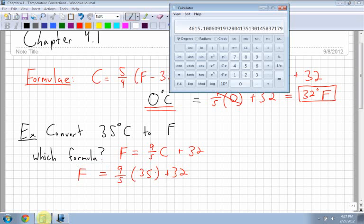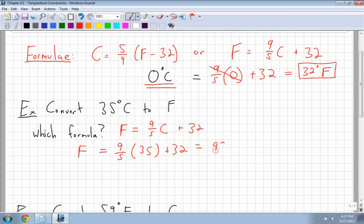Good idea to use your calculator. So I go 9 divided by 5 for nine-fifths, multiplying it by 35, and then adding 32. So using my order of operations, I get 95 degrees. So that's 95 degrees Celsius.